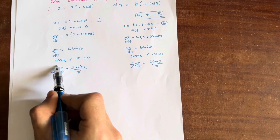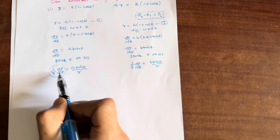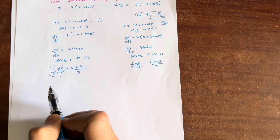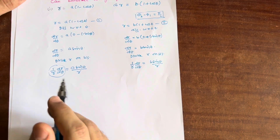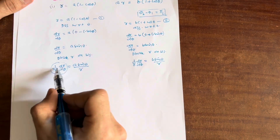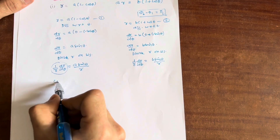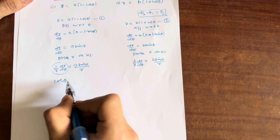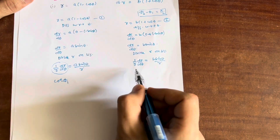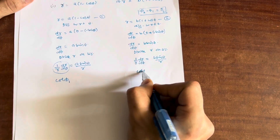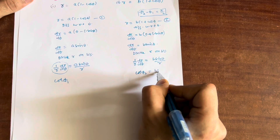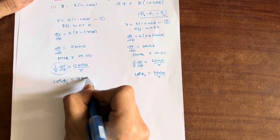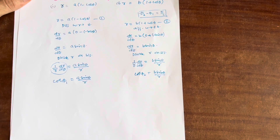Now, we already derived in the previous videos that 1/R · dr/dθ equals cot φ. Now φ enters the picture. I call this φ₁ for the first equation, so cot φ₁ equals A sin θ divided by R. For the second equation, cot φ₂ equals B sin θ divided by R.